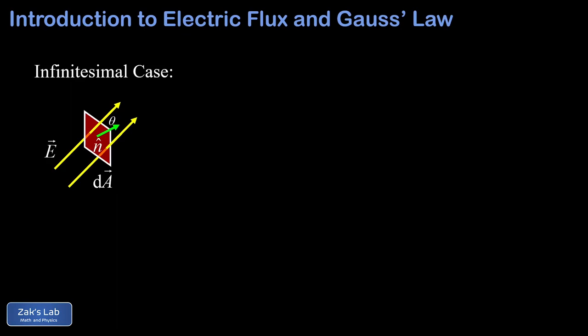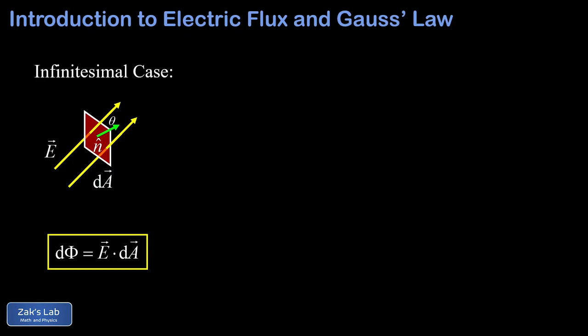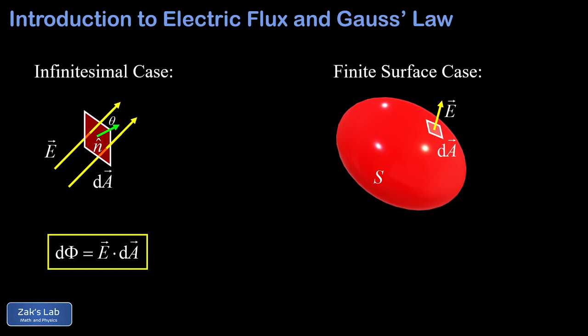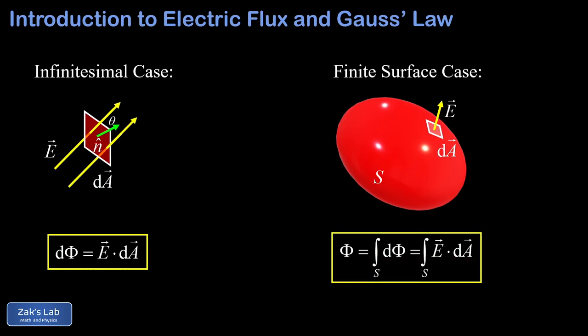It's not hard to adapt the definition of flux to a tiny infinitesimal patch of area that we call dA. Provided this area patch is truly infinitesimal, that guarantees E and N hat are constants in the flux calculation because the area is so small that there's no room for them to change. So we apply our flux formula to this infinitesimal case and arrive at an infinitesimal flux contribution d Phi equals E dotted into dA, where the direction of dA is the direction of the normal vector at that particular location. Now we can write down the flux through an extended surface S by simply adding up all the d Phi contributions using integration, so the total flux is the integral of E dotted into dA over the surface.